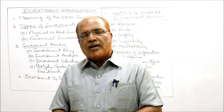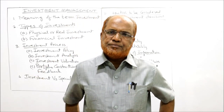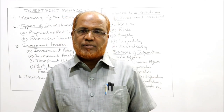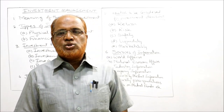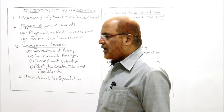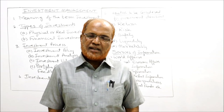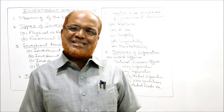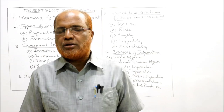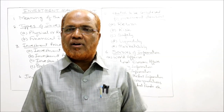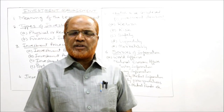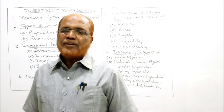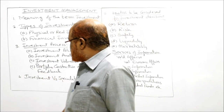Third, the investor will invest in securities which are not easily marketable, whereas the speculator makes investment in securities which are easily marketable and can be quickly converted into cash. As a simple example: if I buy shares with an intention to get dividend, I am the investor. If someone buys shares with the objective of capital appreciation — buy cheap and sell dear — that person is the speculator.